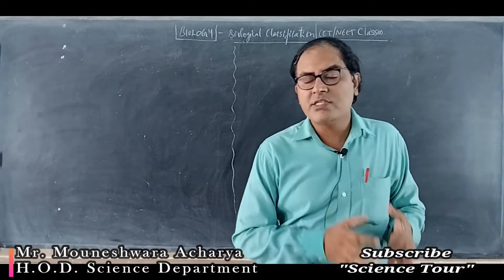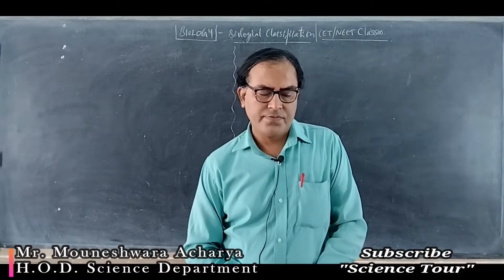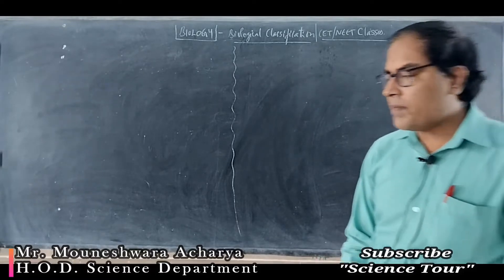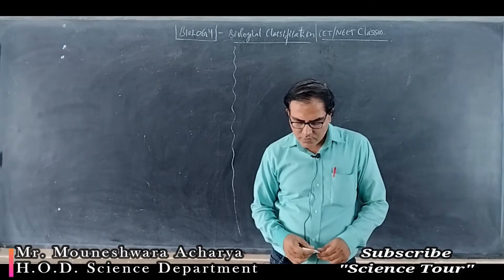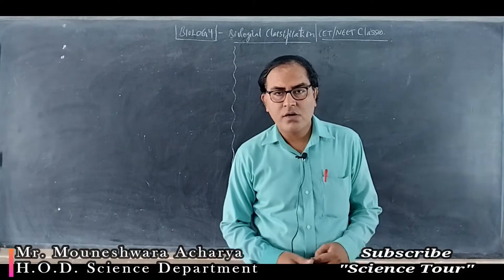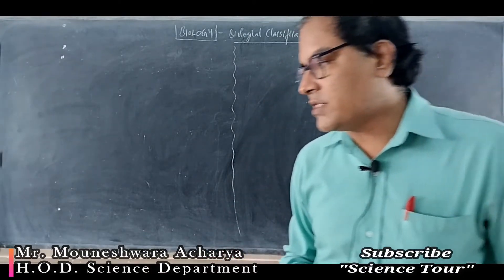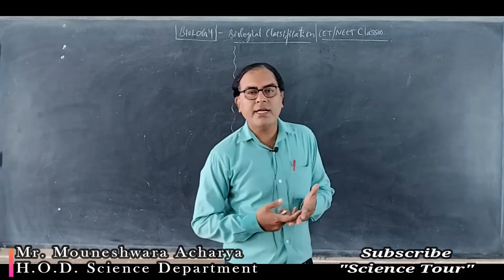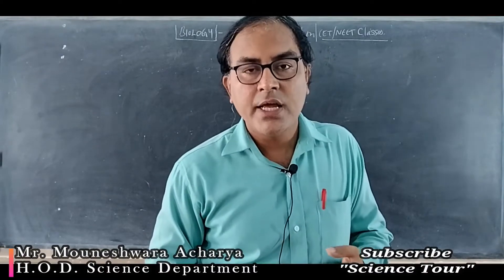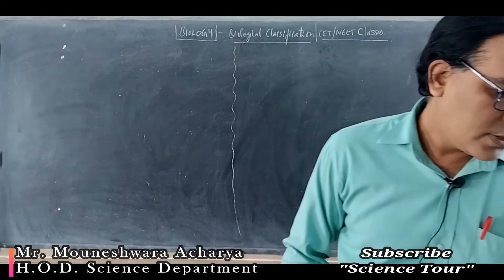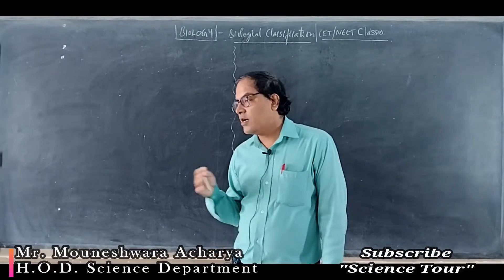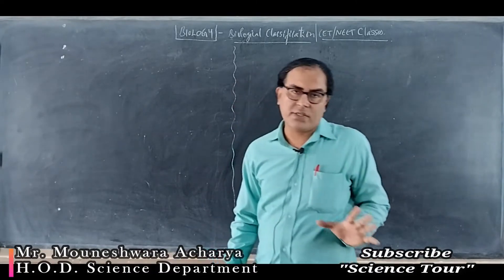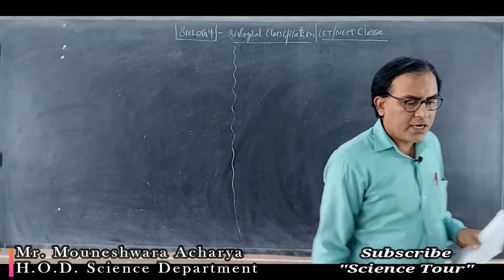Let me come to the topic — Biological Classification. This topic is already done for your board classes. Robert H. Whittaker gave the five-kingdom system of classification. According to him, the five kingdoms are: Kingdom Monera, Kingdom Protista, Kingdom Mycota (or Fungi), Kingdom Plantae, and Kingdom Animalia. This five-kingdom system of classification was given in the year 1969. We have already studied the different kingdoms and their characteristics in this chapter, so we will discuss the worksheet questions based on these concepts.